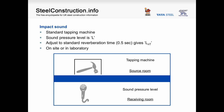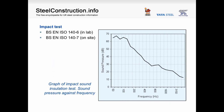Sound insulation of impact sound is carried out slightly differently. A tapping machine is used in the source room and the sound pressure level is measured in the room below, the receiving room. This is termed L. Again, this result is adjusted for a standard reverberation time of 0.5 seconds and this value is given the term L subscript NT. Impact sound can also be measured on-site or in a laboratory. The standard result for an impact sound test again shows variation in sound level across the frequency range.